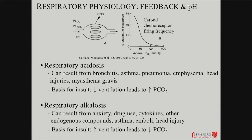Diseases that can give rise to respiratory acidosis include bronchitis, asthma, pneumonia, and head injuries. With bronchitis, you get lung inflammation and mucus production that creates a barrier to diffusion, so you get less carbon dioxide blown off and it builds up.